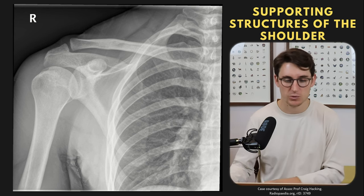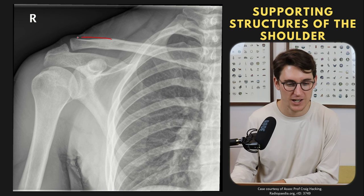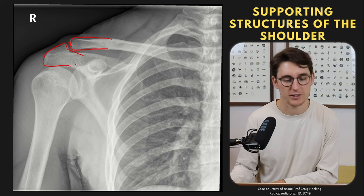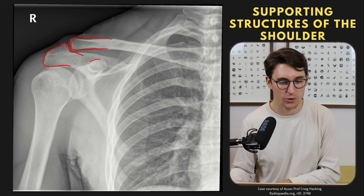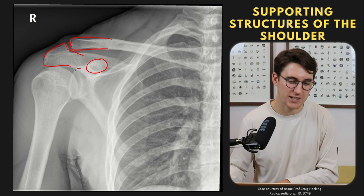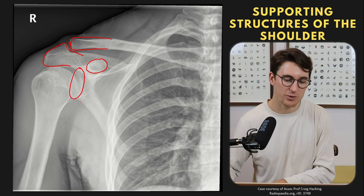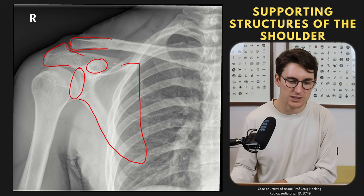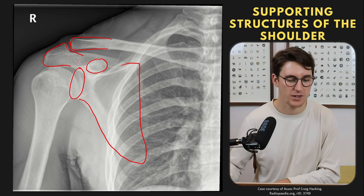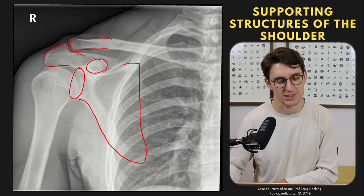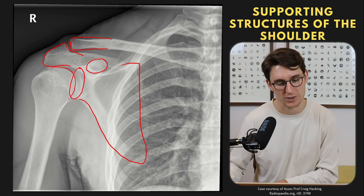Starting with the bones: the clavicle comes across and attaches by the AC joint to the acromion of our scapula. Anteriorly we have our coracoid process — a really important landmark on MRI scans. We can see the shallow glenoid fossa, and the scapula posteriorly with its spine coming across to the acromion. Our humerus has a humeral head that articulates with this glenoid fossa — this is our glenohumeral joint.